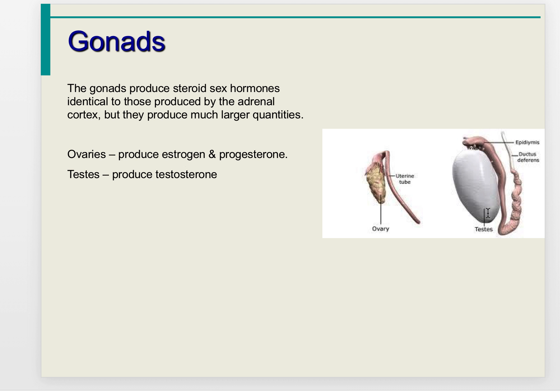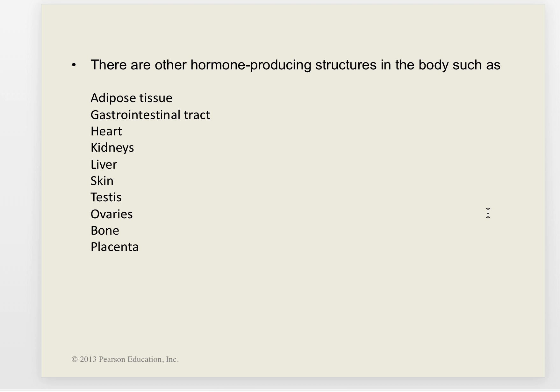The gonads are the ovaries and testes. The ovaries produce estrogen and progesterone in females; the testes produce testosterone in males. It is also worth noting that other structures in the body produce hormones, including adipose tissue, the heart, the kidneys, and the liver, though these will not be covered in detail in this lecture.